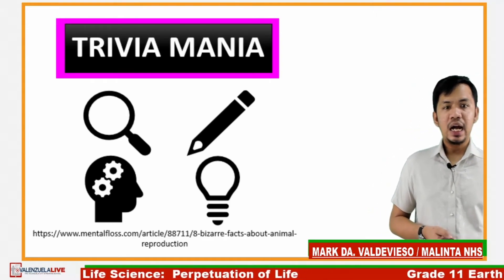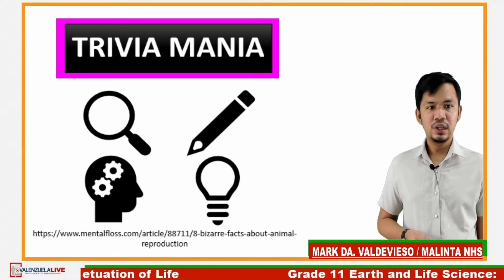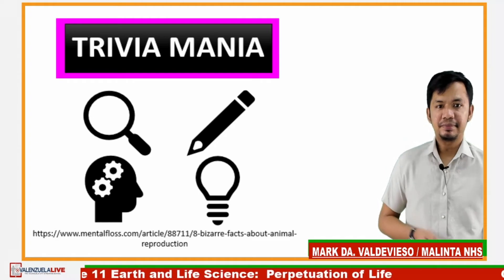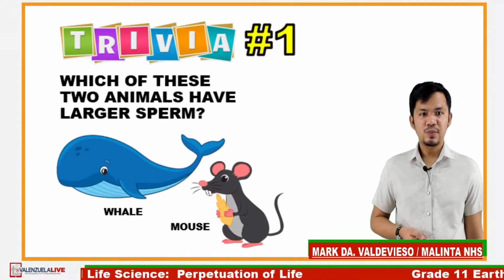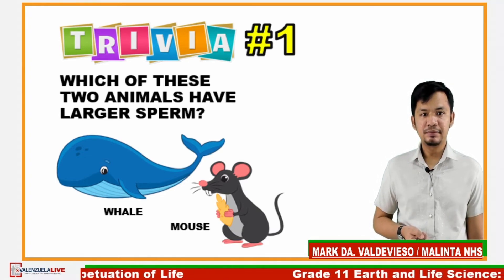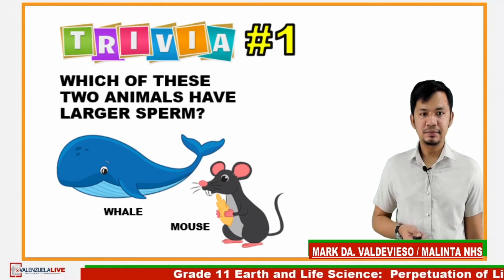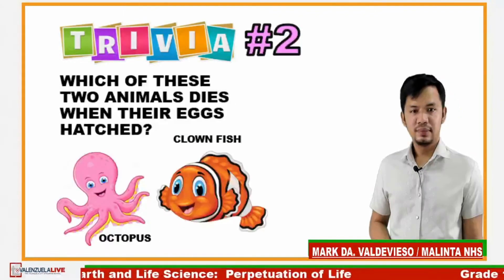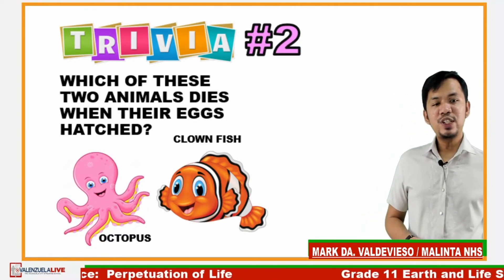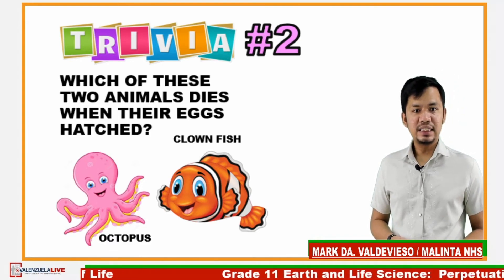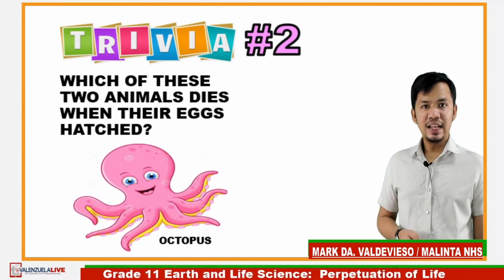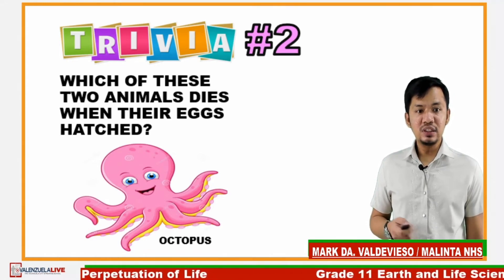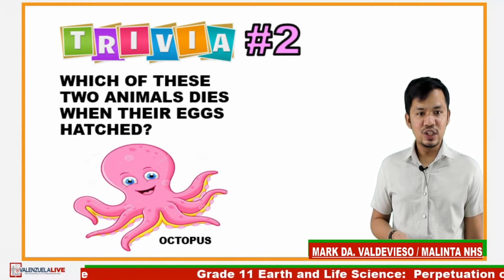Let's proceed to activity number two — trivia time. You'll learn a cool trivia regarding the topic via the Socratic method. Which of these two animals has a larger sperm — the whale or the mouse? It's the mouse — small but terrible! How about this one: which of these two animals dies when their eggs hatch — the octopus or the clownfish? The answer is the octopus. The mother octopus never leaves her nest until the eggs hatch, and she died through starvation just to protect her youngsters.